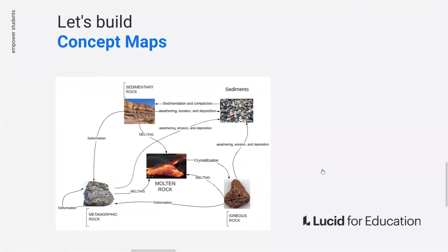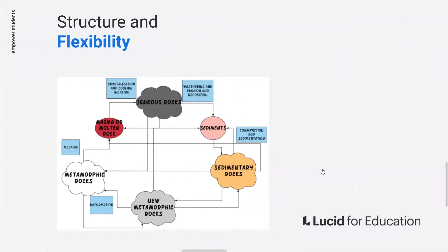In this example, a teacher gave students the assignment to show the three different classifications of rocks — sedimentary, metamorphic, and igneous — as well as how they are related to one another. One student demonstrated their knowledge using images to create their concept map, while another chose to use shapes to demonstrate the same knowledge. No two would be the same, but all demonstrated the same principle. Lucidchart allows for such flexibility.